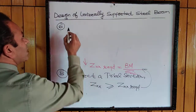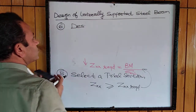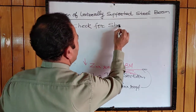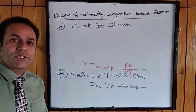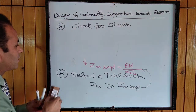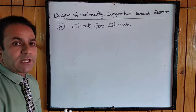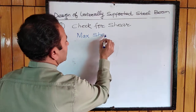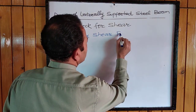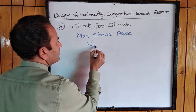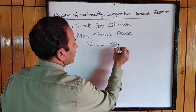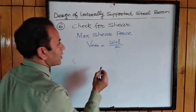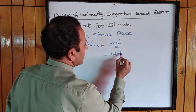Apart from bending, we check whether the section fulfills requirements for other design parameters. The first parameter after bending is shear. We check the section for shear by calculating the maximum shear force. For a simply supported beam, V max equals total load times l divided by 2.